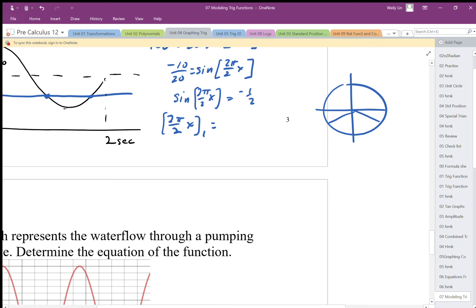Well, sine is equal to negative 1/2 in those two quadrants. So we're going to have it at 7π over 6, and then we'll use a positive version that's going to be 11π over 6. So 7π over 6 and 11π over 6 are the two angles.